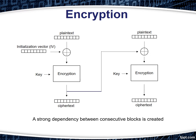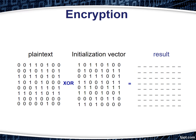According to the previous description, each cipher text block depends on the previous plain text blocks processed up to that point. Therefore, a strong dependency between consecutive blocks is created. Now we look at how CBC works.